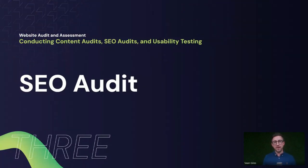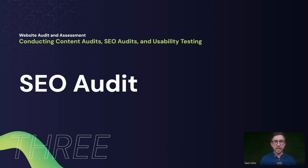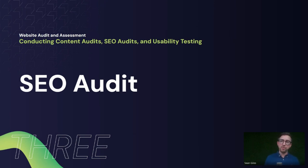An SEO audit is very important in terms of understanding how your content is performing from a content perspective. Are you using the right keywords? Do you have the right content length? What elements do you need to address within the current content? That's a good second step after the content audit. If you've narrowed down from 100 pages to the core 10 or 15 pages, do the SEO audit on those core pages rather than every page to start with.